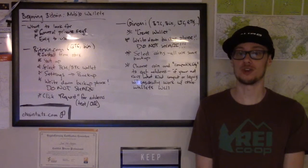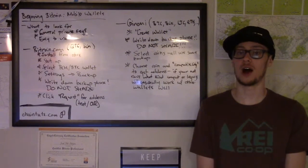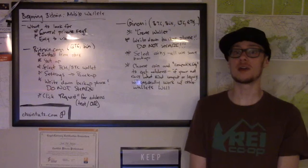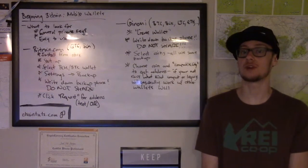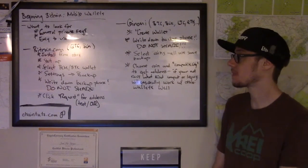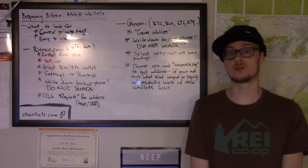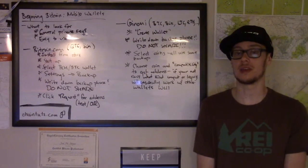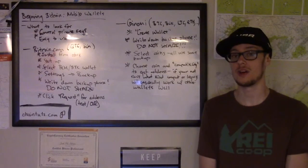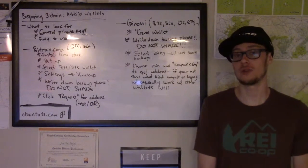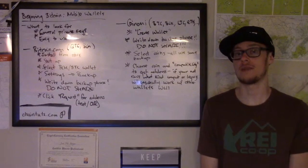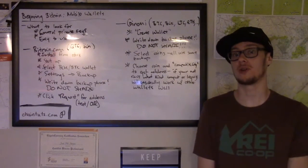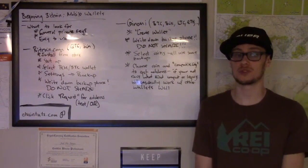The first wallet I'll show you how to use is the Bitcoin.com wallet. This wallet supports Bitcoin Cash (BCH) and Bitcoin (BTC). To get started, you'll install the app on your phone using the application store of your choice — Google Play for Android and the App Store on iOS. This app is totally free and it's open source as well.